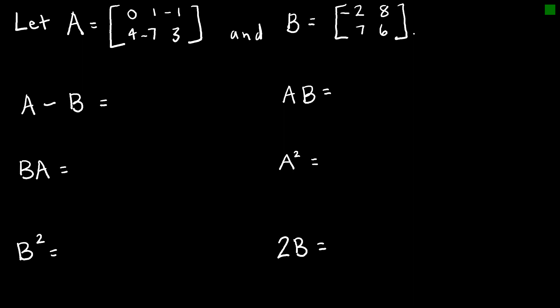Here are some practice questions. If you'd like, press pause, try all six questions, then press play to see how you did. I have two matrices: A is a 2 by 3, B is a 2 by 2. First, A minus B — since subtraction requires the same dimensions, this is not possible. Then A times B: taking 2 by 3 times 2 by 2 — those don't match up, so that's not possible either.